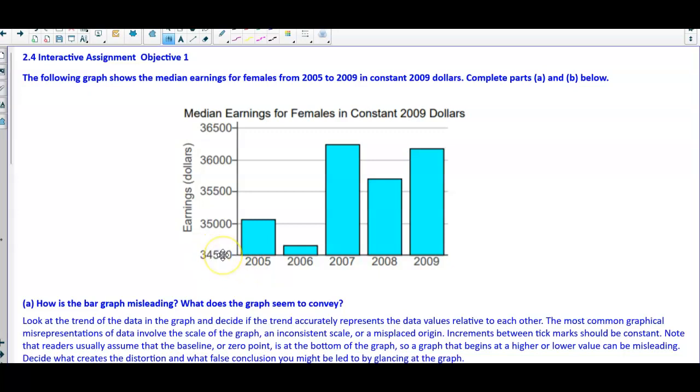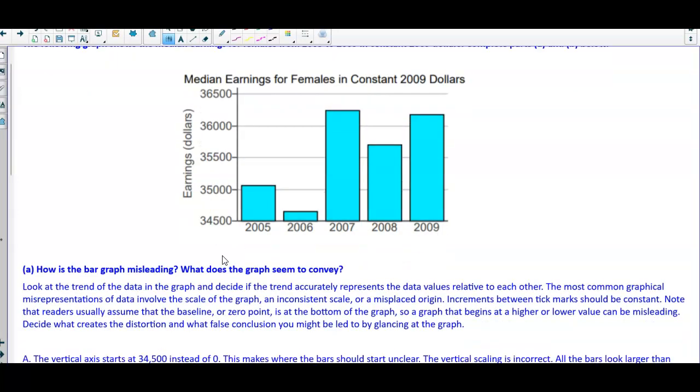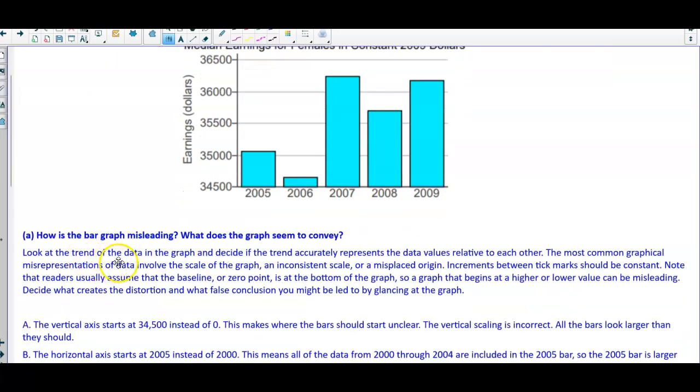If it's starting at 34,500, what's going on here? You want to look at the trend of the data in a graph and decide if the trend accurately represents the data values relative to each other. The most common graphical misrepresentations of data involve the scale of the graph, an inconsistent scale, or a misplaced origin.